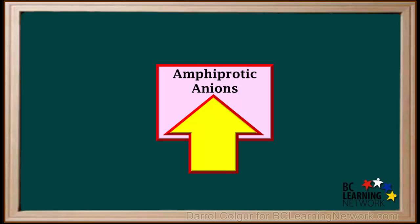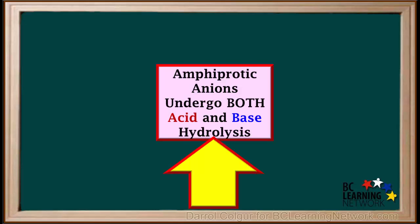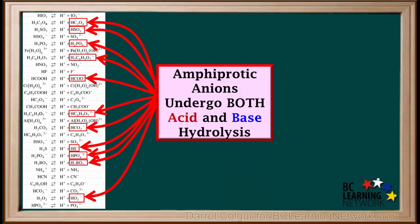Amphiprotic anions are the negative ions on the right side whose formulas start with an H. Amphiprotic anions undergo both acid and base hydrolysis. What we have to do with these is determine which hydrolysis is predominant — how to do that is shown on the video 'Hydrolysis of Amphiprotic Anions.' Notice their formulas all start with an H and they all have negative charges.